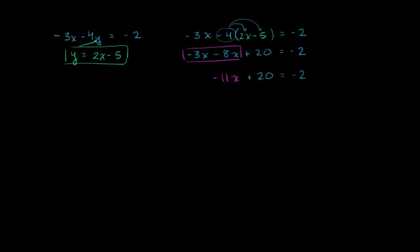Now to solve for x, we'll subtract 20 from both sides. On the left-hand side, we're left with negative 11x, and on the right-hand side, we're left with negative 22. Now we divide both sides by negative 11, and we get x equals 2, since 22 divided by 11 is 2 and the negatives cancel out.